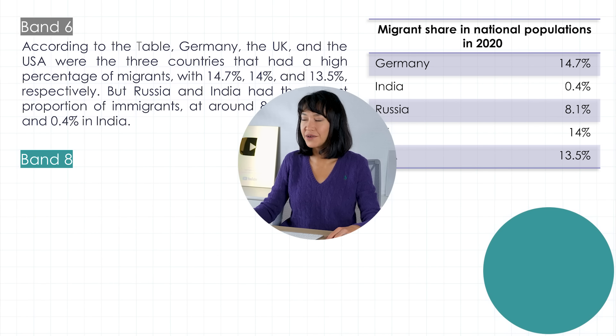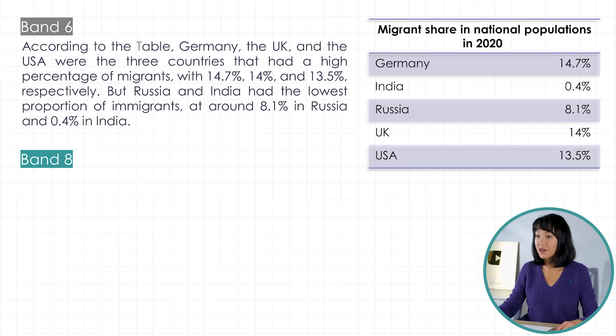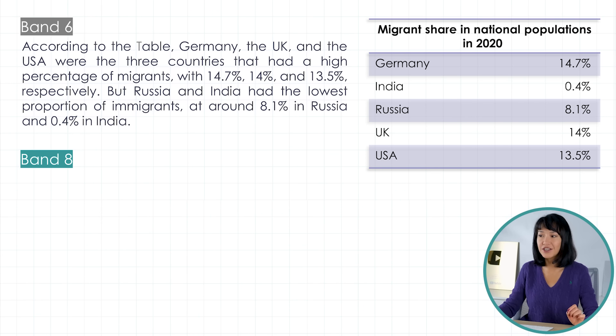And have you noticed that some changes to the ways we join things together have an effect on the grammar and vocabulary as well? The basic paragraph structure stays the same, but the points made are clearer. Let's have a look at the third paragraph about the table. 'According to the table, Germany, the UK and the USA were the three countries that had a high percentage of migrants, with 14.7%, 14% and 13.5% respectively. But Russia and India had the lowest proportion of immigrants, at around 8.5% in Russia and 0.4% in India.' Just two sentences — it covers the main points. But does it present highlights and illustrate key features clearly and appropriately, or manage all aspects of cohesion well?